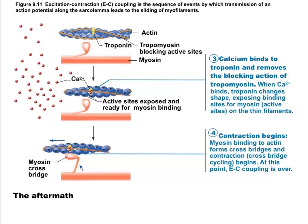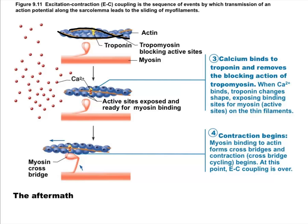We have myosin — the thick protein — which has motor heads that do the pulling. We have actin, the blue protein. The goal is to get myosin to bind actin and pull on it; that's where the force of muscle contraction is generated. The other two proteins are tropomyosin, a long rope-like protein that blocks myosin from binding actin when muscles are resting — at rest, tropomyosin covers the myosin binding site on actin so the two can't contact each other.